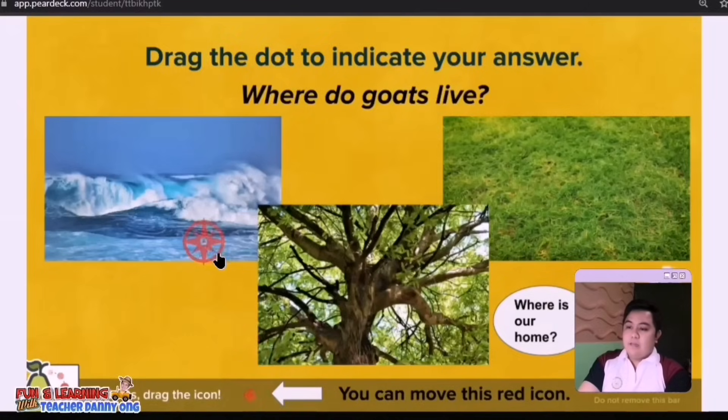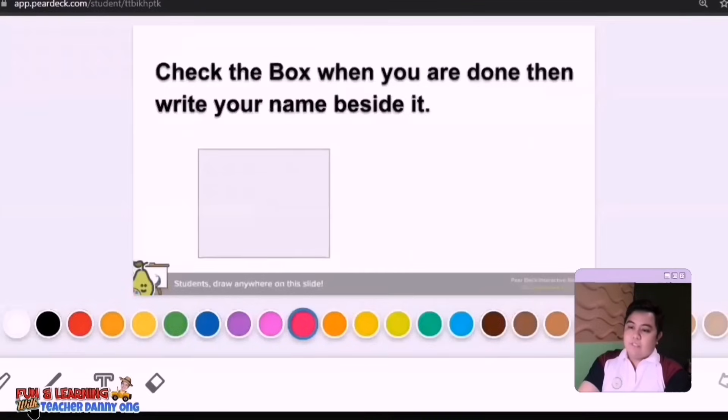The next slide is drag and drop where we're going to drag and drop this red icon to where the goat lives. And there, we're done. So let's check the last slide and affix our signature. These are just sample activities that we can do.